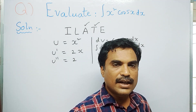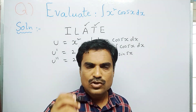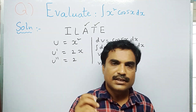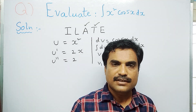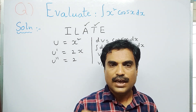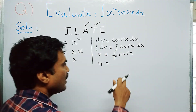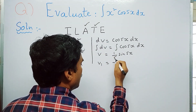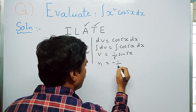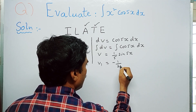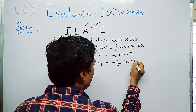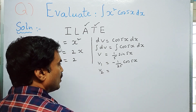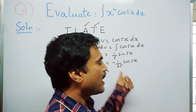Integrating again to get v₁: using ∫sin(ax) dx = −(1/a)cos(ax) with a = 5, and the existing factor 1/5, this gives v₁ = −(1/25)cos 5x.